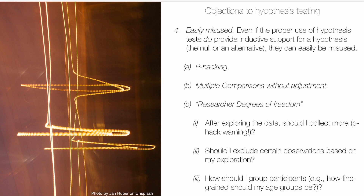Proponents of these kinds of objections will say something like: maybe frequentist inference is on sound footing and has proper justifications, but the justifications are so convoluted and the methods are so convoluted that they're easily misused — and for that reason they're problematic and we should look for alternative methods. One example is p-hacking: it's quite easy to get a smaller p-value by removing or adding data points, claiming something is an outlier, or manipulating your dataset to give you the result you want, even though that's a violation of the logic of frequentist inference, which requires a fixed sample size.